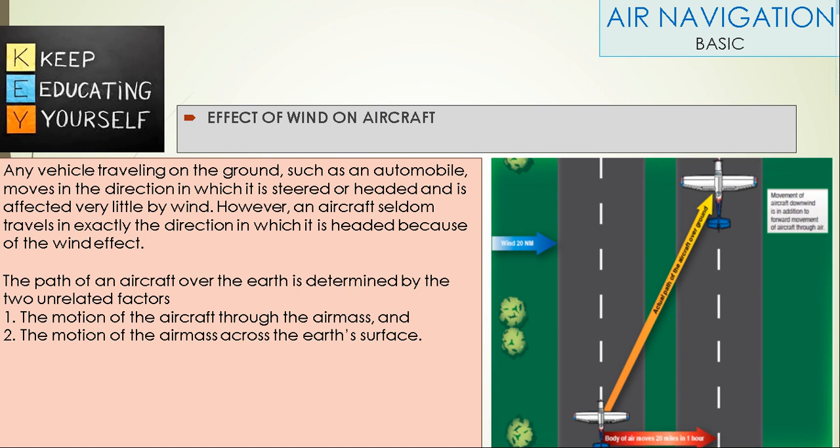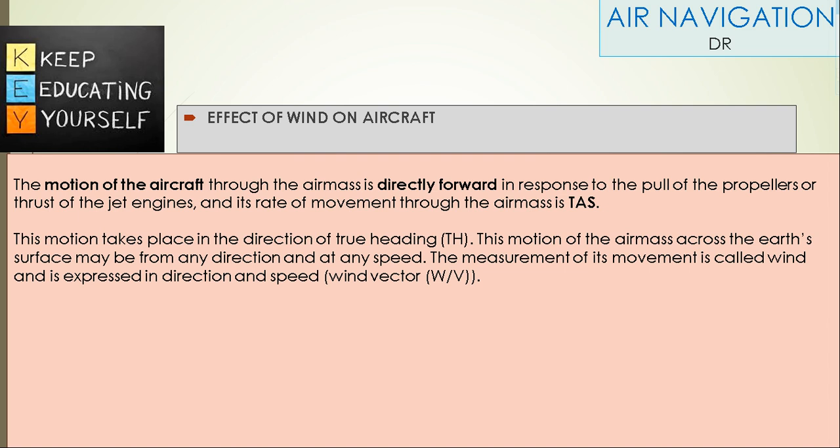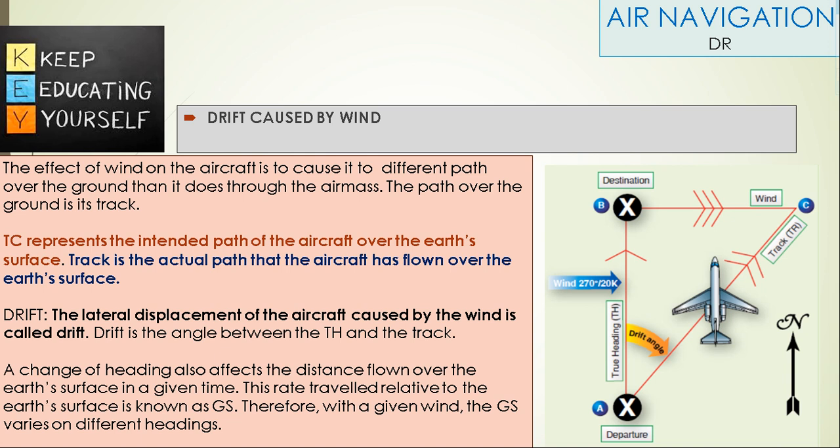The path of the aircraft over the earth is determined by two unrelated factors. First, the motion of the aircraft through the air mass, and second, the motion of the air mass across the earth's surface. The motion of the aircraft through the air mass is directly forward in response to the pull of the propellers or thrust of the jet engines, and its rate of movement through the air mass is true air speed. This motion takes place in the direction of true heading. The motion of the air mass across the earth's surface may be from any direction at any speed. The measurement of its movement is called wind and is expressed in direction and speed as a wind vector.